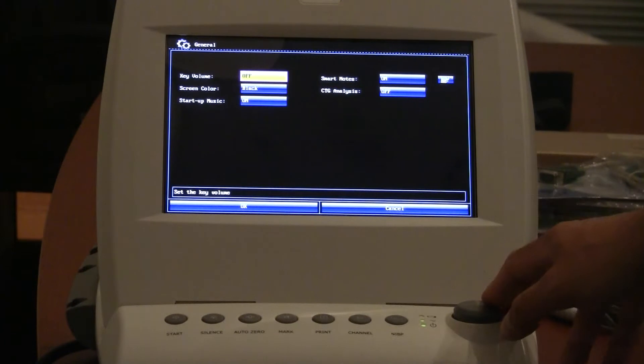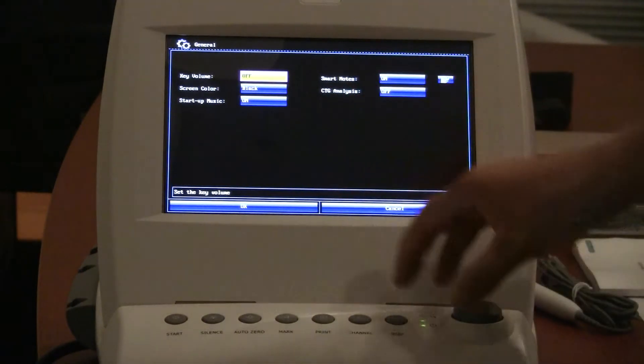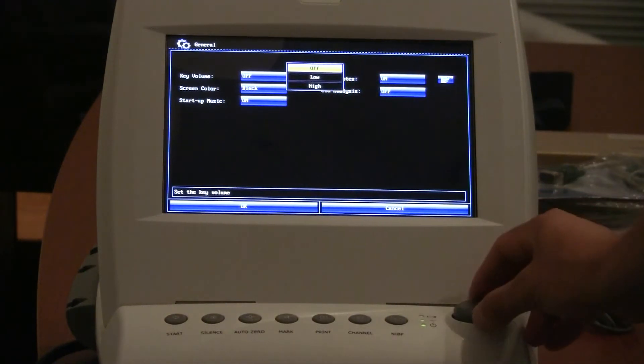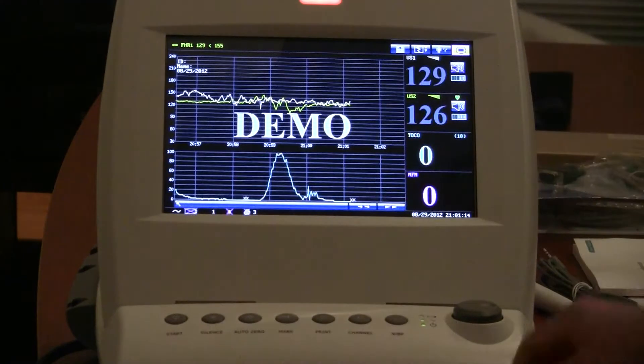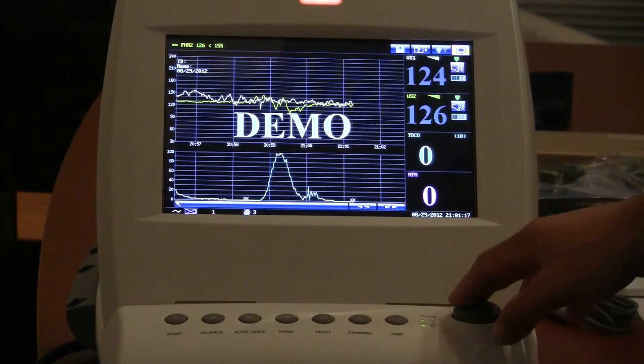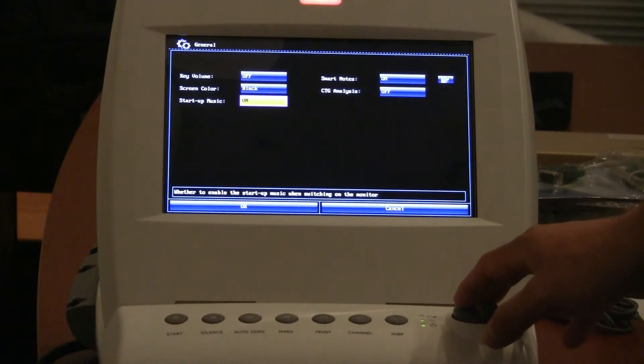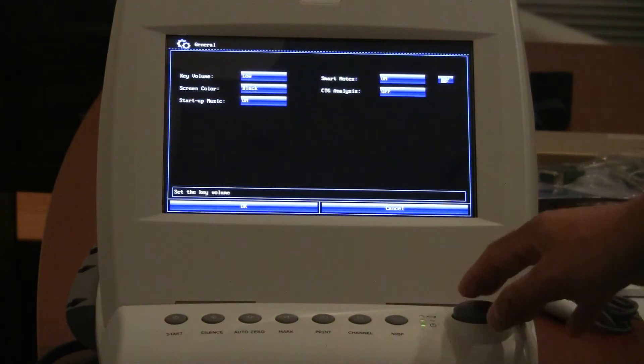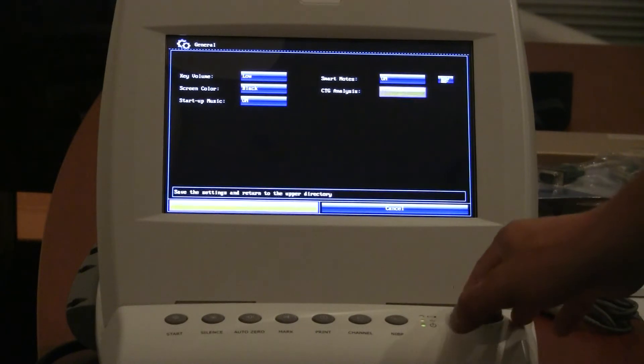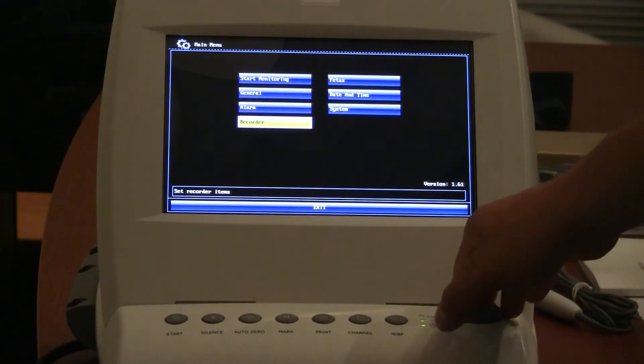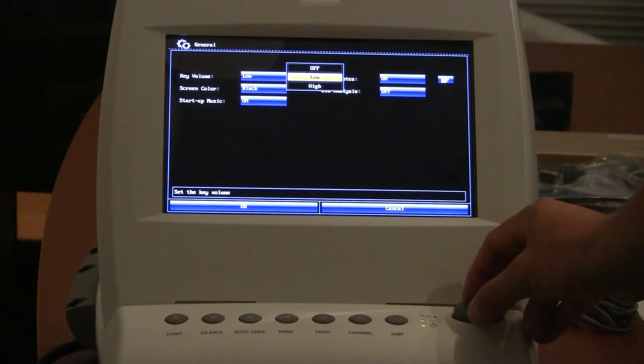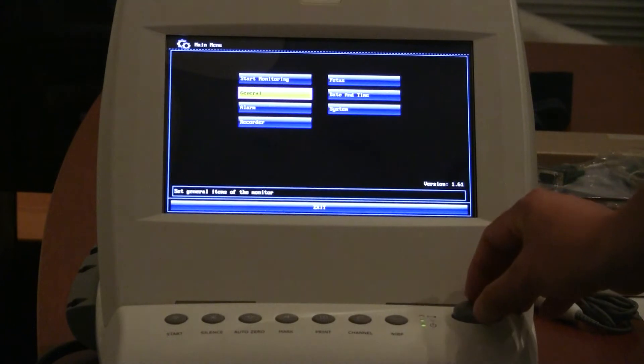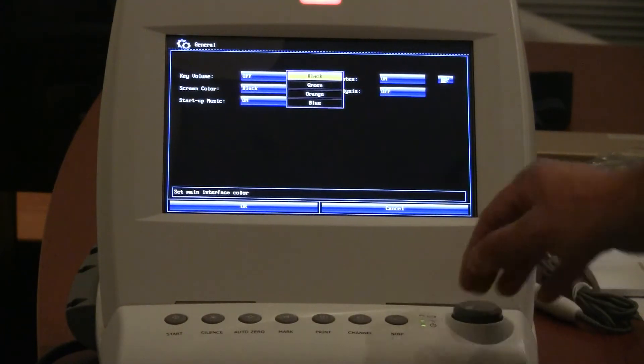Jump up here to general settings. Key volume, I have it off, and that would be every time we, if we turn it on to low, we'll hit that silence button that time. We'll jump back into here. So we're in key volume. If we go to low or high, every time I turn the knob now it makes a sound, and you can change the level of that sound. Again, I have it set to off so it doesn't interfere.